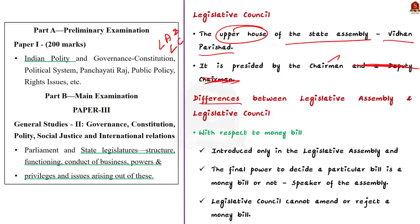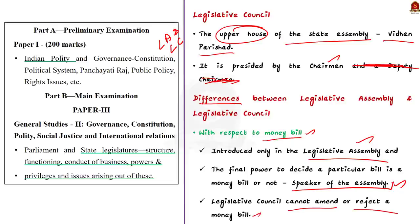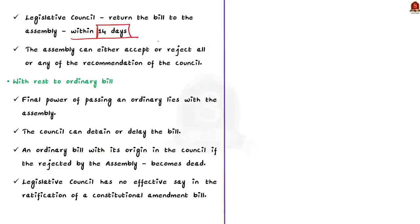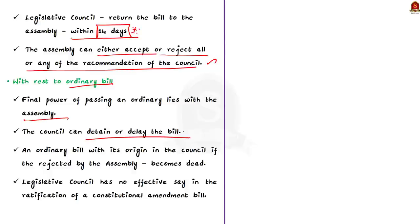First, with respect to money bills: a money bill can be introduced only in the legislative assembly and not in the legislative council. The final power to decide whether a particular bill is a money bill is vested with the speaker of the assembly. The legislative council cannot amend or reject a money bill — it should return the bill to the assembly within 14 days either with recommendations or without, but the assembly can accept or reject any of the council's recommendations. Second, with respect to ordinary bills: the final power of passing an ordinary bill also lies with the assembly. The council can only detain or delay the bill — up to three months in the first instance and one month in the second instance. Thus the legislative council is just like an advisory body.